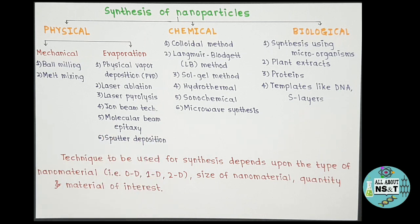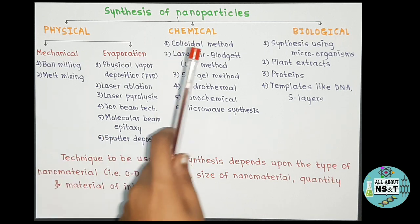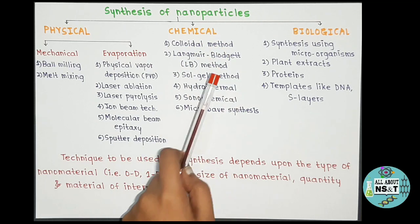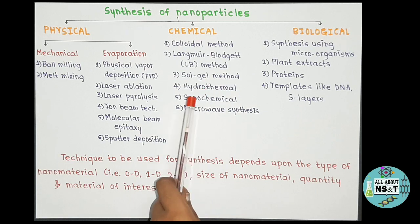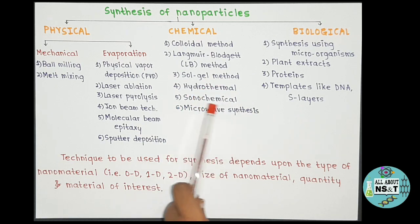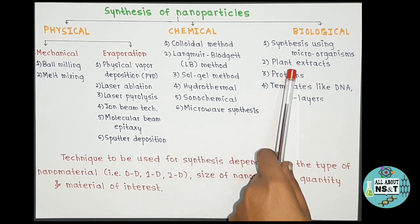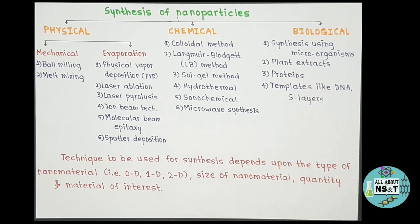The different techniques involved in the chemical route are the colloidal method, Langmuir-Blodgett method, sol-gel method, hydrothermal method, sonochemical method, and microwave synthesis. The techniques used in the biological route are synthesis using microorganisms, synthesis using plant extract, synthesis using proteins, and synthesis using templates like DNA and S-layers.